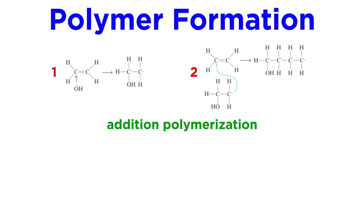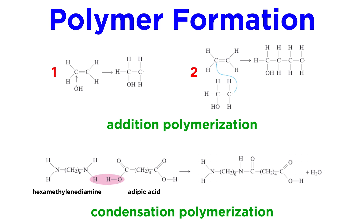Polymerization can occur by a variety of mechanisms. Sometimes they go by addition polymerization, which is a radical mechanism, meaning that it employs radical intermediates which have unpaired electrons. Another mechanism is condensation polymerization, where each time two monomers are joined, a water molecule is lost.